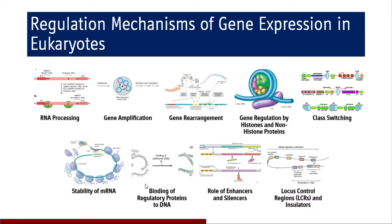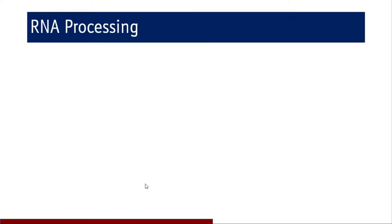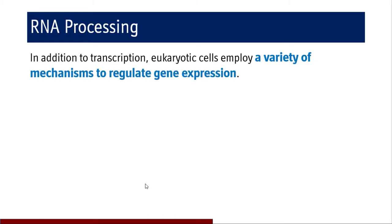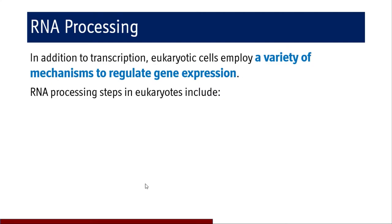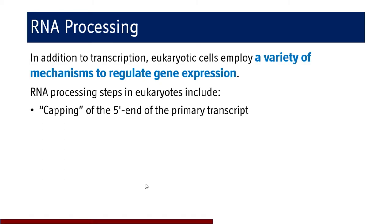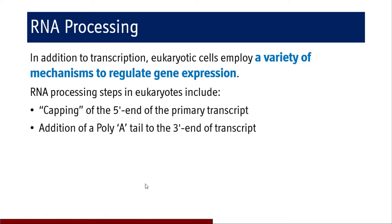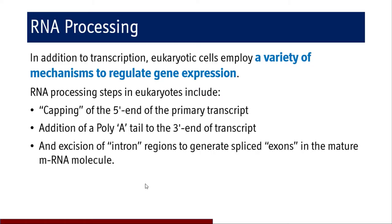Coming to RNA processing: in eukaryotic cells, a variety of mechanisms to regulate gene expression exist in addition to transcription. The RNA processing steps in eukaryotes include 5' end modification — that is, capping of the 5' end of the primary transcript — addition of poly-A tail at the 3' end of the transcript, and excision of intron regions and splicing of exons to produce the mature mRNA molecules. These three RNA processing steps were discussed in detail in the session on post-transcriptional modification.